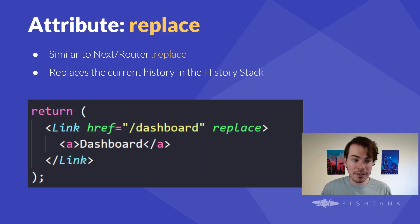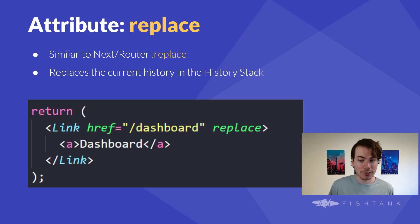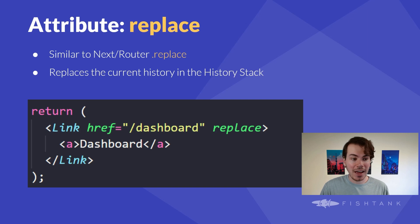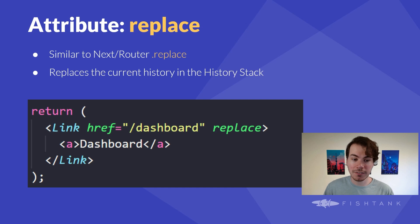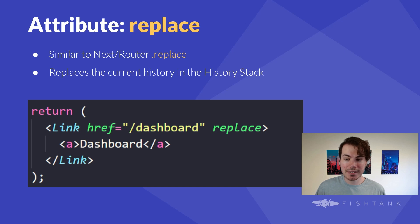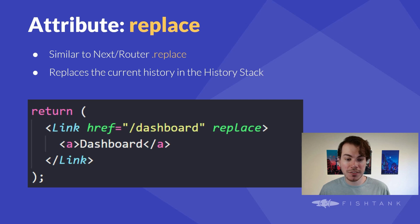The next attribute I want to talk about is replace. This works the same as the Next router replace, except it's specifically for link elements. It defaults to false, but when it's set to true, Next.js Link will replace the current history state instead of adding the new URL to the browser's history stack. This is great if you want to navigate the user to a new page but don't want to change that history stack. For example, imagine you have a multi-step form or wizard-like interface. As the user progresses through the steps, you want them to navigate between steps but don't want each step to add a new entry to the browser's history. This way, if the user hits the back button, they won't go through each previous step, but instead will return directly to the page they were on before starting the form.